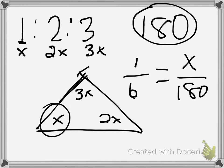So I'm looking for one of the measures, the smallest one, out of all of the 6. But if I have this one and I double it, then I got this one. If I have this one and I triple it, then I have this one. So this is the one that we want to find. So 1 out of the 6 is equal to x out of 180.